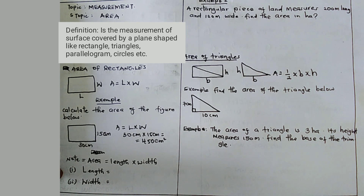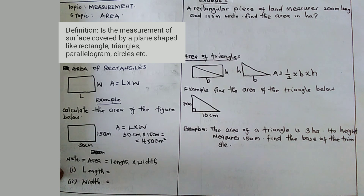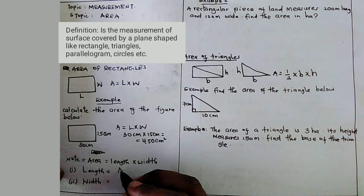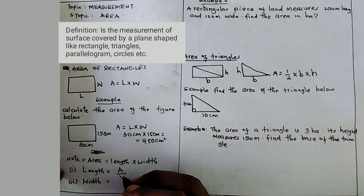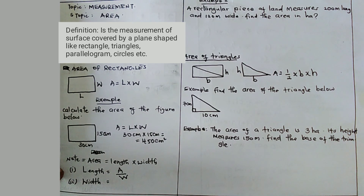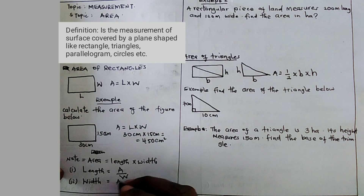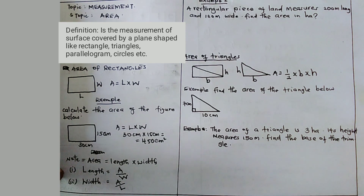Note, students — this is very important. Area equals length times width. Sometimes you will be asked for the length, so if you are asked the length, length equals area over width. And if you are asked for the width, width equals area over length. You will be given the area or the length and told to find the width, so that is the formula you can use.